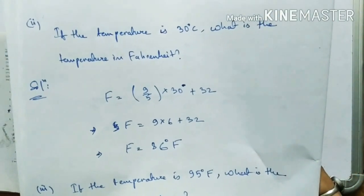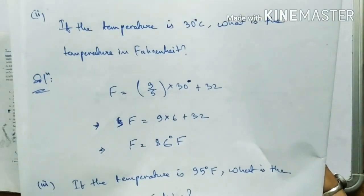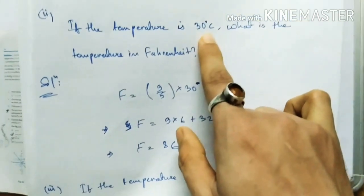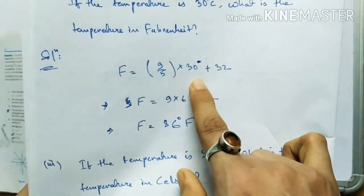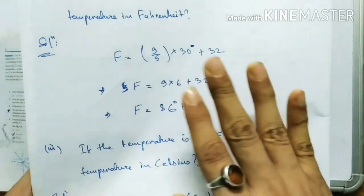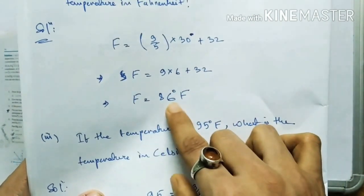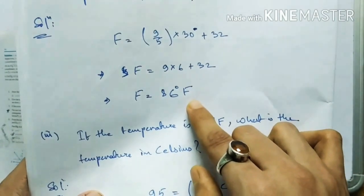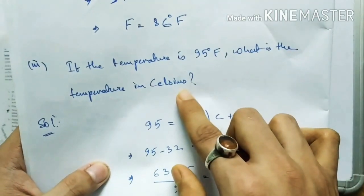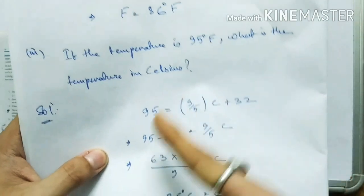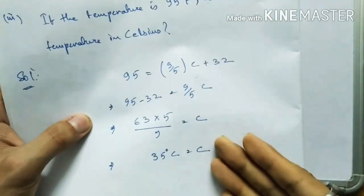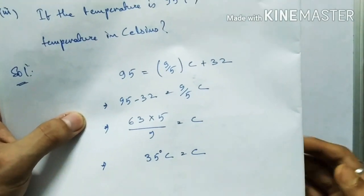If the temperature is 30 degrees Celsius, substitute C=30 into the equation to get F equals 86 degrees Fahrenheit. If the temperature is 95 degrees Fahrenheit, substitute F=95 and solve for C — you get C equals 35 degrees Celsius.